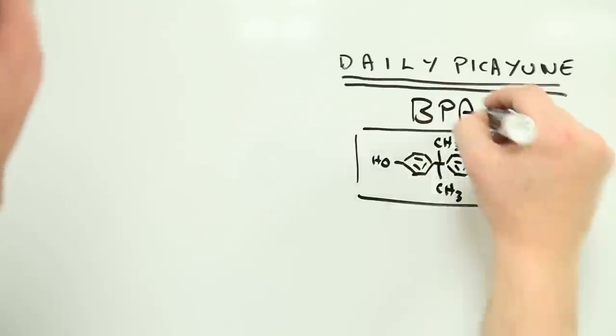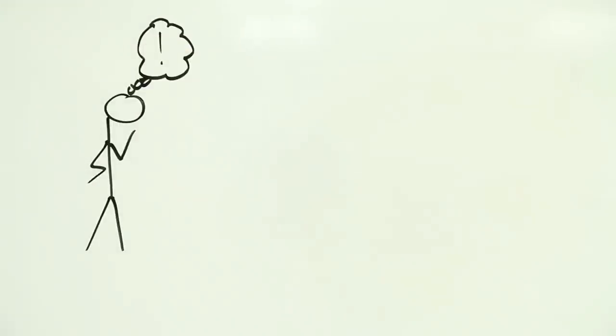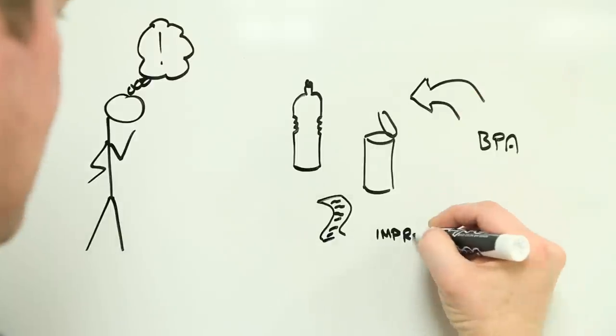Bisphenol A, or BPA, is one of those synthetic chemicals that regularly hits the headlines. It's used in polycarbonate plastics, food can liners, thermal till receipts, and other everyday objects.